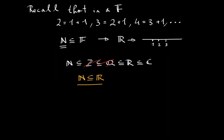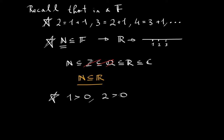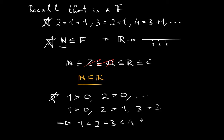When we did ordered fields — this was one consequence of the field axioms at the start of the course — another consequence of ordered fields was that 1 is greater than 0, and 2 is greater than 0, and so on. We can also say that 1 is less than 2, which is less than 3, which is less than 4, which is less than 5, and so on. And this is another consequence of ordered fields.